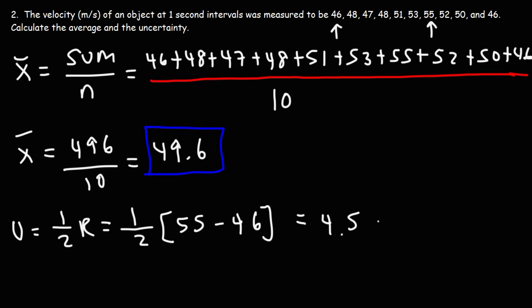And we could round that up to one sig fig. So we'll say approximately 5. So the velocity in these 10 seconds, we could say it's 49.6 plus or minus 5. 5 is our uncertainty.